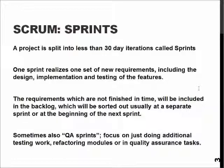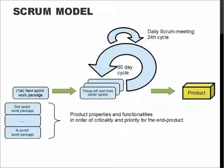Additional testing like load testing or performance testing requires a somewhat stable system to work with. We may also need to refactor modules to get rid of unnecessarily complicated code or bad code habits, or simply do quality assurance tasks to verify that the product will fulfill the quality requirements when the last sprint is done. So basically, the sprints may sometimes only keep realizing the things which are left over from earlier sprints.